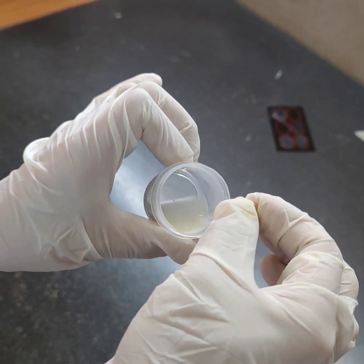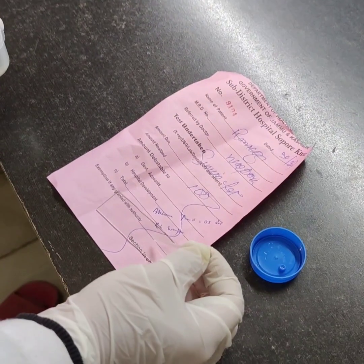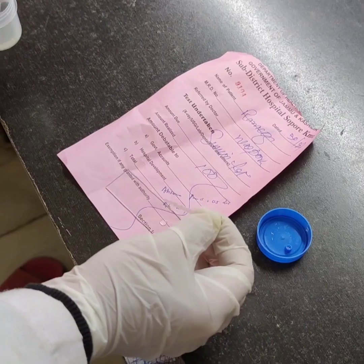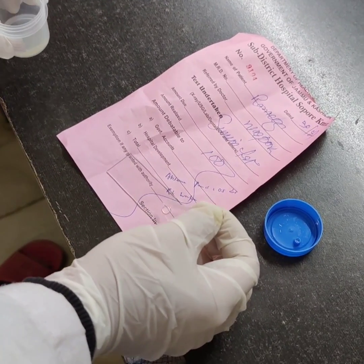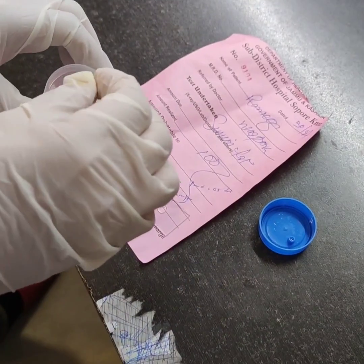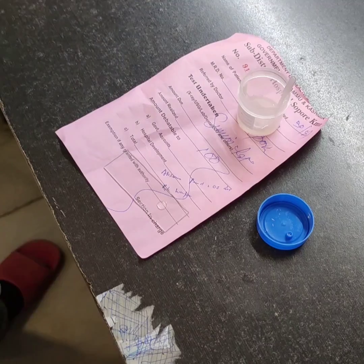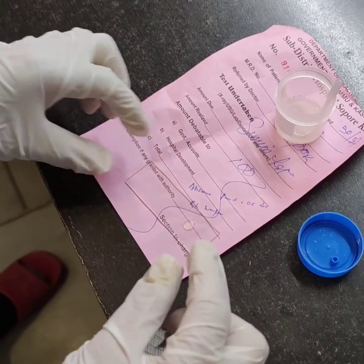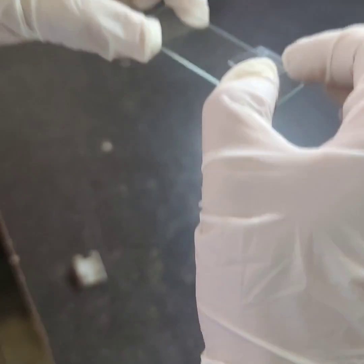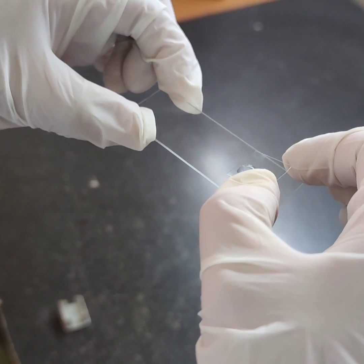If the sample is properly liquefied, now put a drop over the slide. Now put the coverslip and place it over the drop. Make sure that the coverslip is properly cleaned.